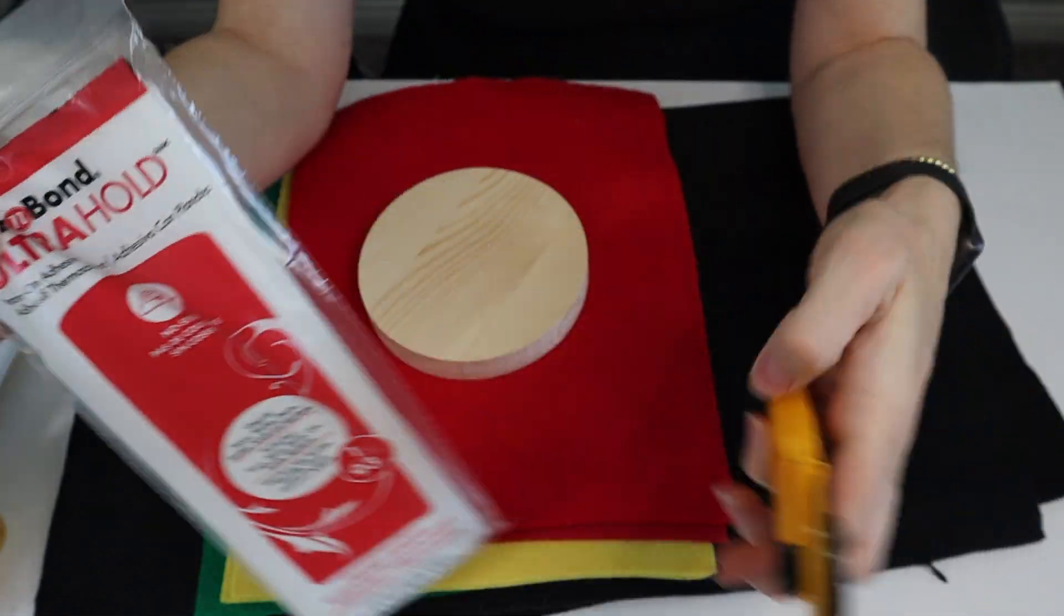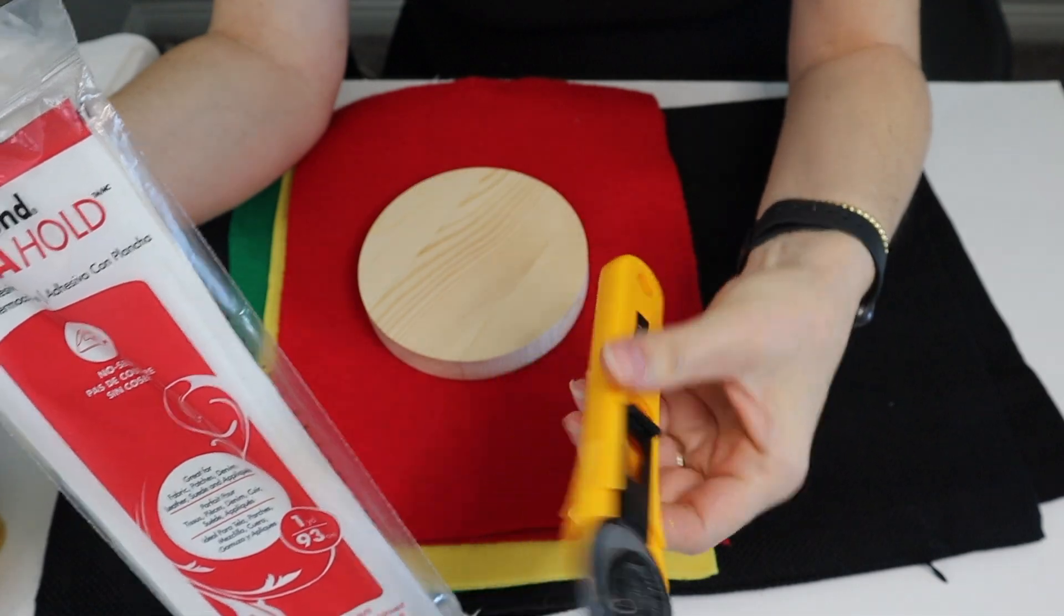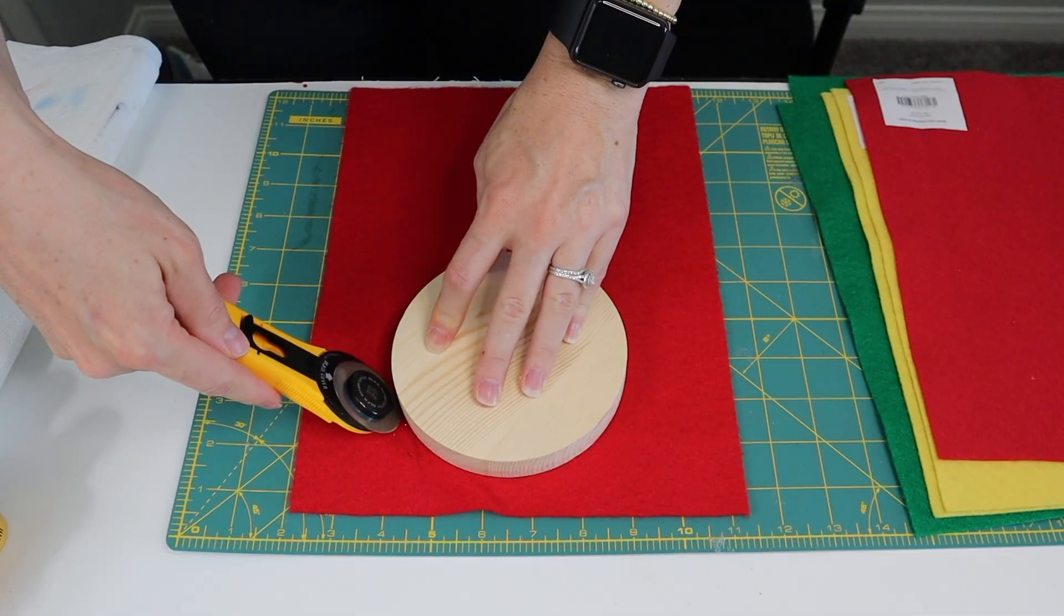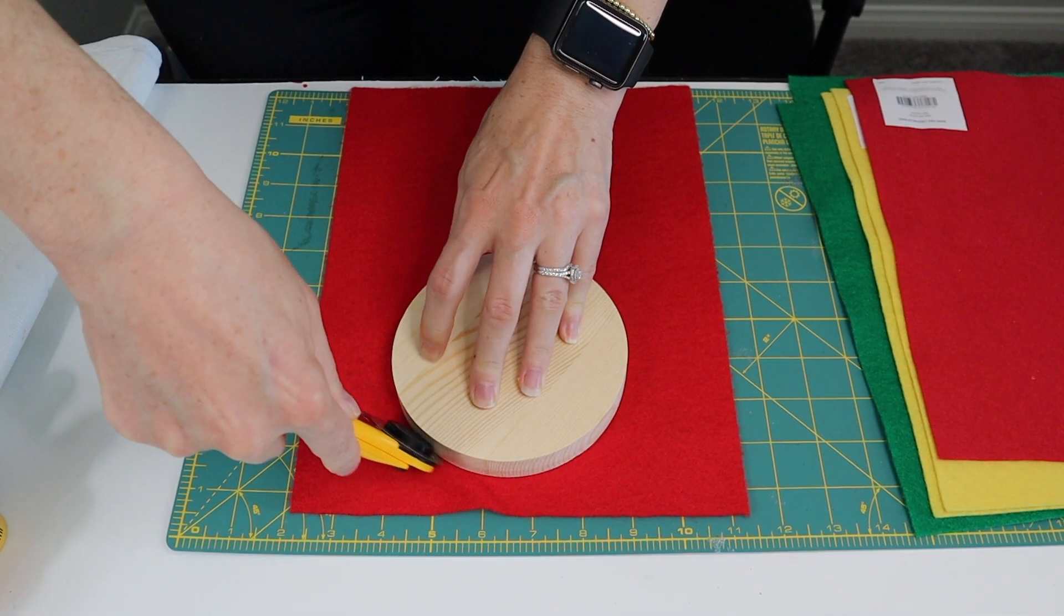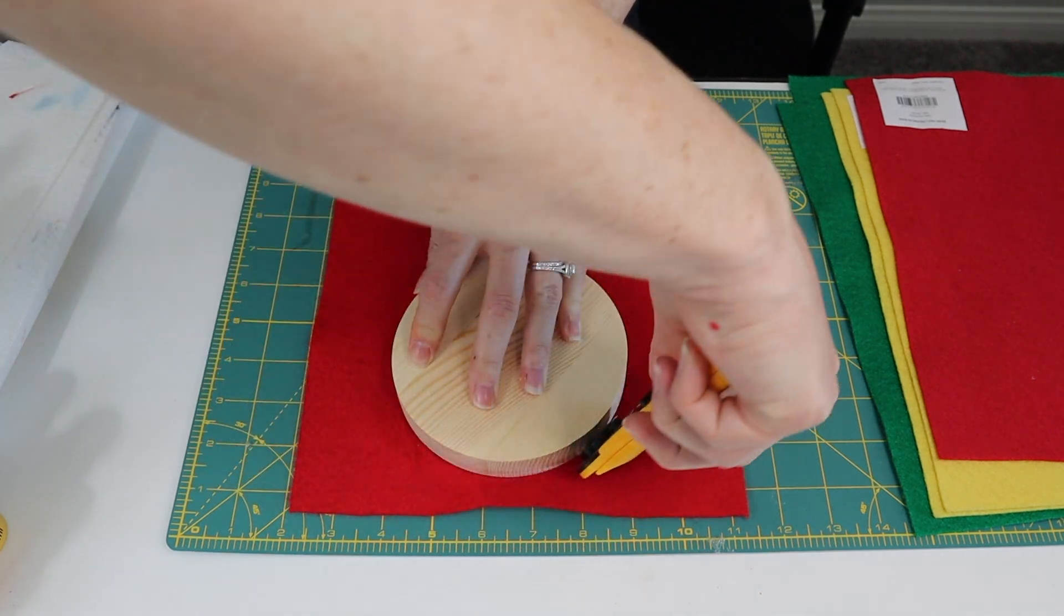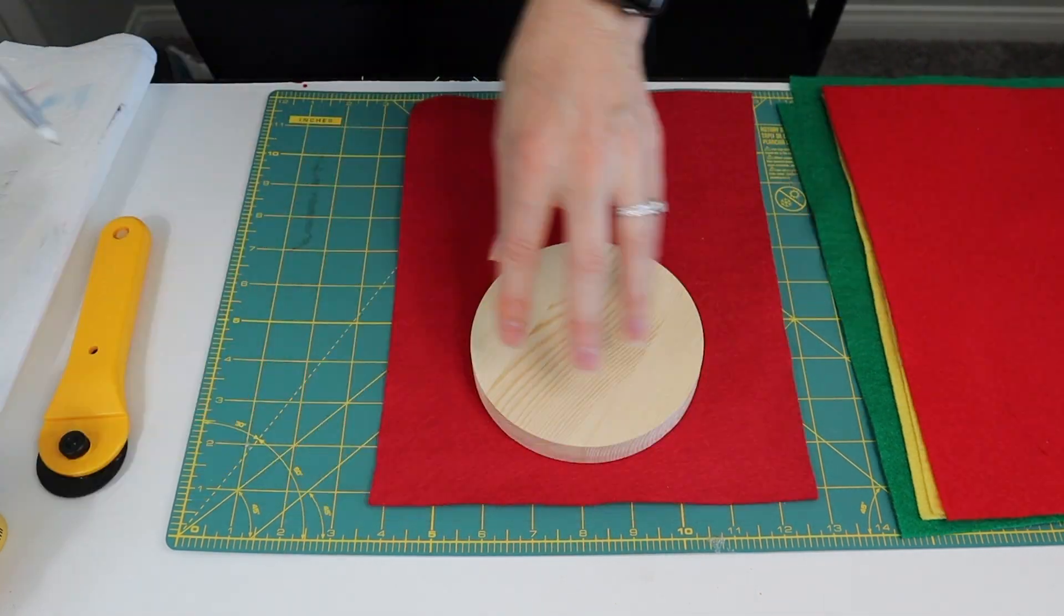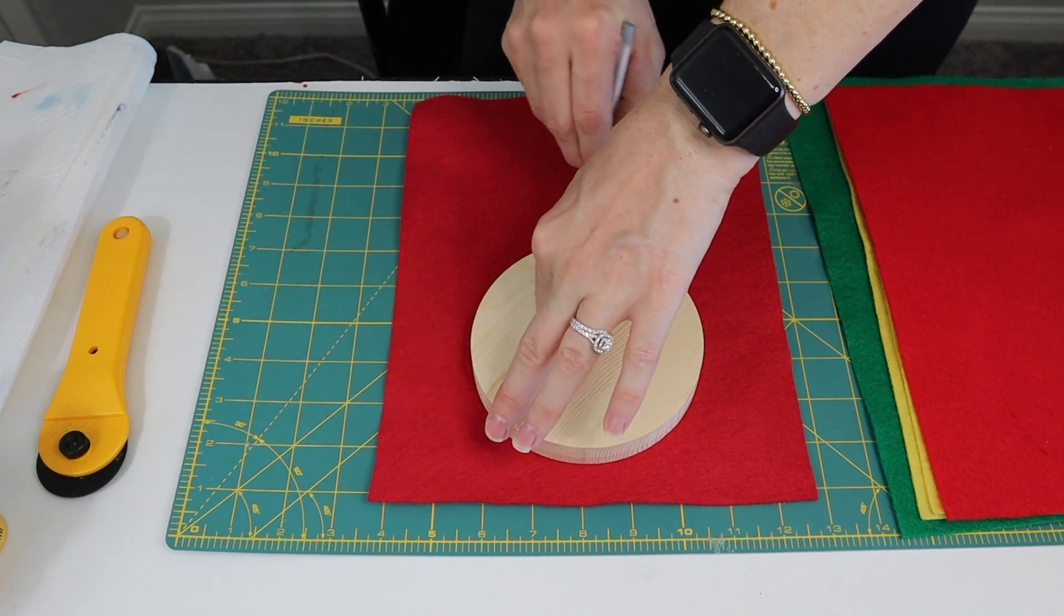Next I'm going to take this iron-on adhesive. I first started out with this fabric cutter and realized that the line was not crisp enough to my liking, so I ended up just using a pin and tracing around the little wood circle there, and then cutting it out.